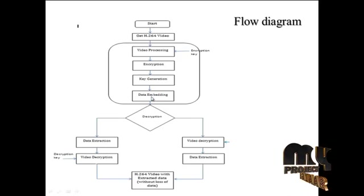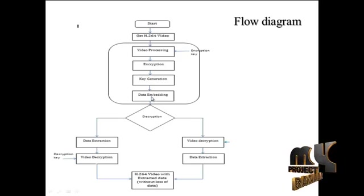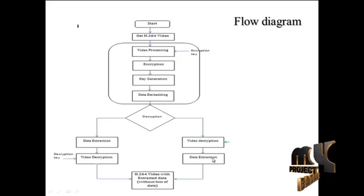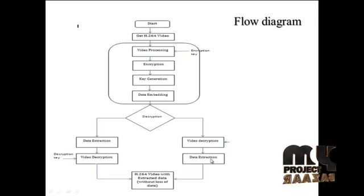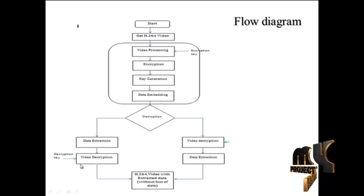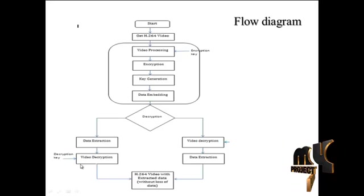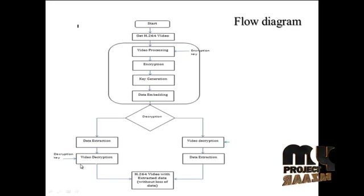After the embedding process is completed, the output is sent to the decryption module. In this decryption module, there are two types of decryption: data extraction after video decryption, and video decryption after data extraction. The decryption module is run using the decryption key. After the decryption key is applied to the video, the video is decrypted and the data is extracted. Finally, we get the original video and the secret file from the embedded video.